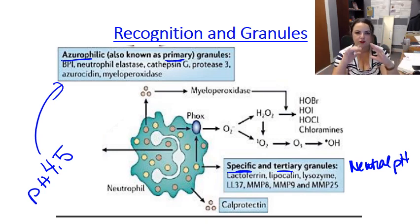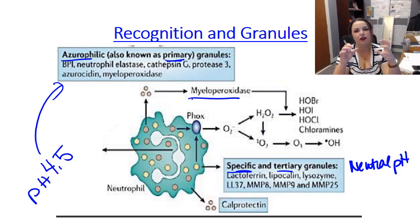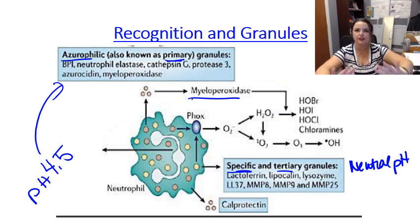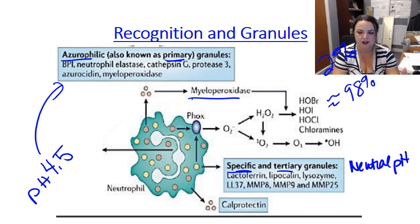At pH 4.5, the azurophilic granules merge with the vacuole. These contain hydrolases like cathepsin G and oxidative enzymes like myeloperoxidase, which work best at acidic pH. These granules cause significant damage, hopefully destroying the bacteria. However, this process alone results in killing only about 2% of engulfed pathogens. The remaining 98% are killed in the next step: creation of reactive oxygen species.